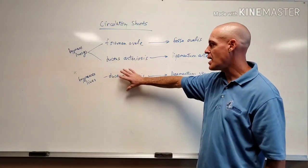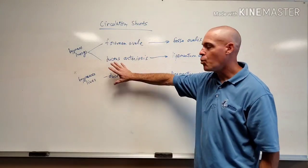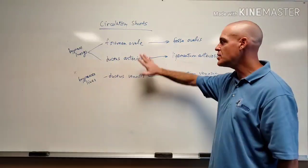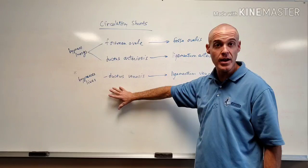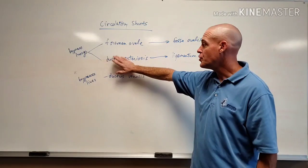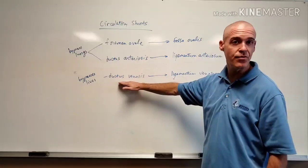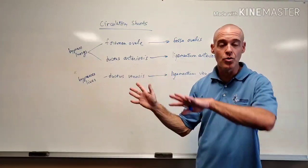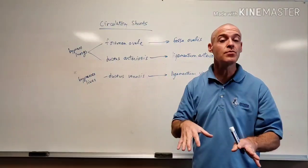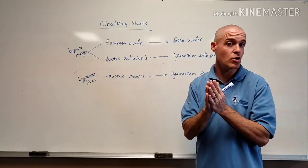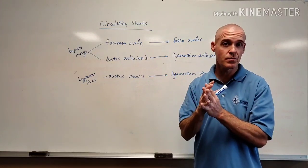So these are the three bypasses, two for the lungs, one for the liver. What do they become? When the baby's born, these are all going to shut. They're going to literally, the ductus arteriosus and the ductus venosus are going to basically become connective tissue. They're going to become ligamentous and just close up. They're going to fibrose.